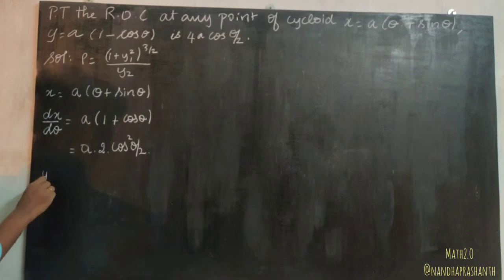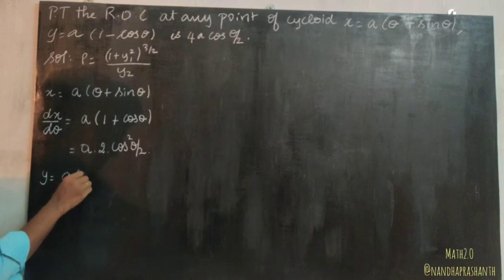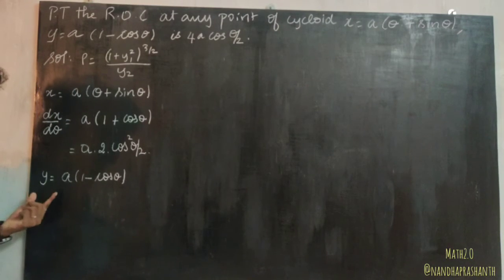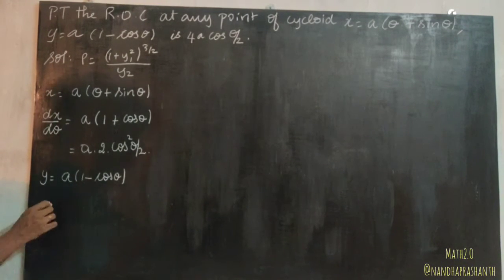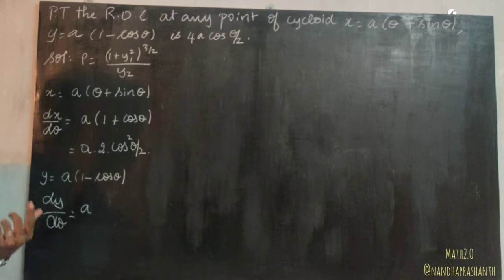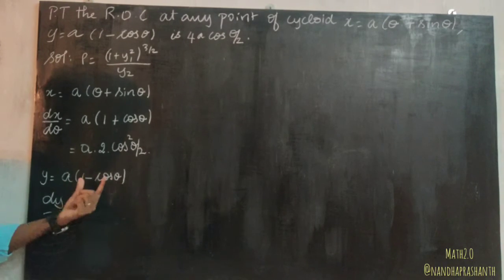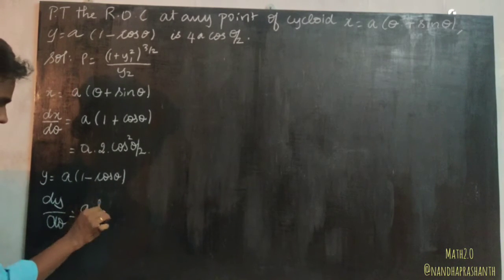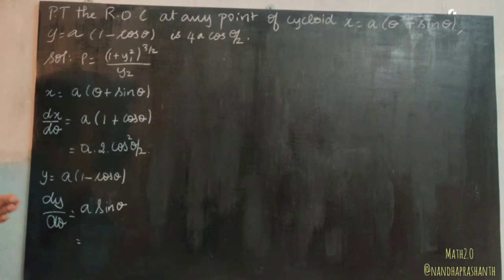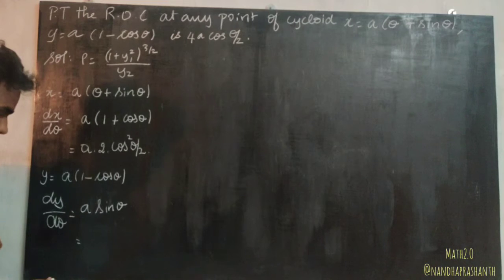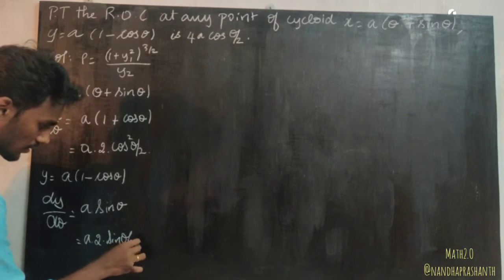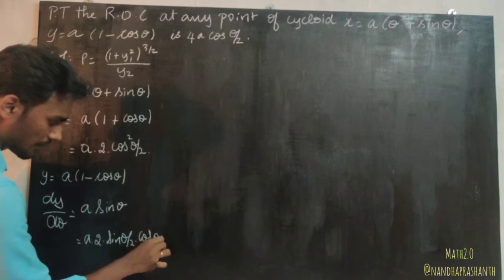y = a(1 - cosθ). Differentiating with respect to θ: dy/dθ = a(0 - (-sinθ)) = a·sinθ. Now sinθ = 2·sin(θ/2)·cos(θ/2), so dy/dθ = 2a·sin(θ/2)·cos(θ/2).